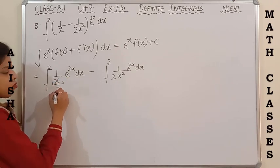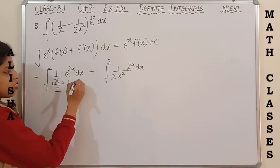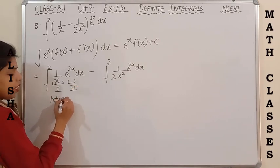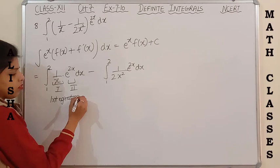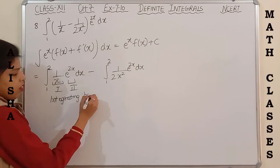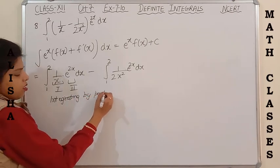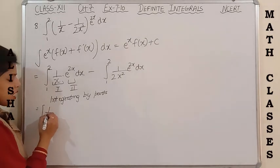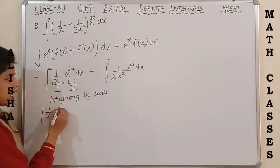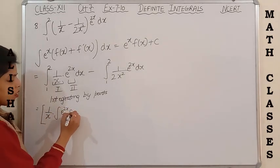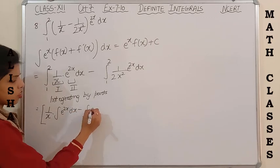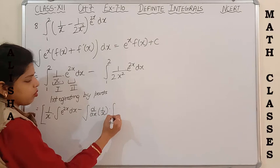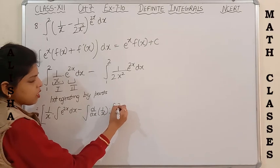We will solve the first integration by integration by parts, taking 1/x as first function and e^(2x) as second function. By integration by parts it becomes: first function as-is times integral of second function, minus integral of [derivative of first function times integral of second function] dx, with limits 1 to 2, and this second integration remains as-is.